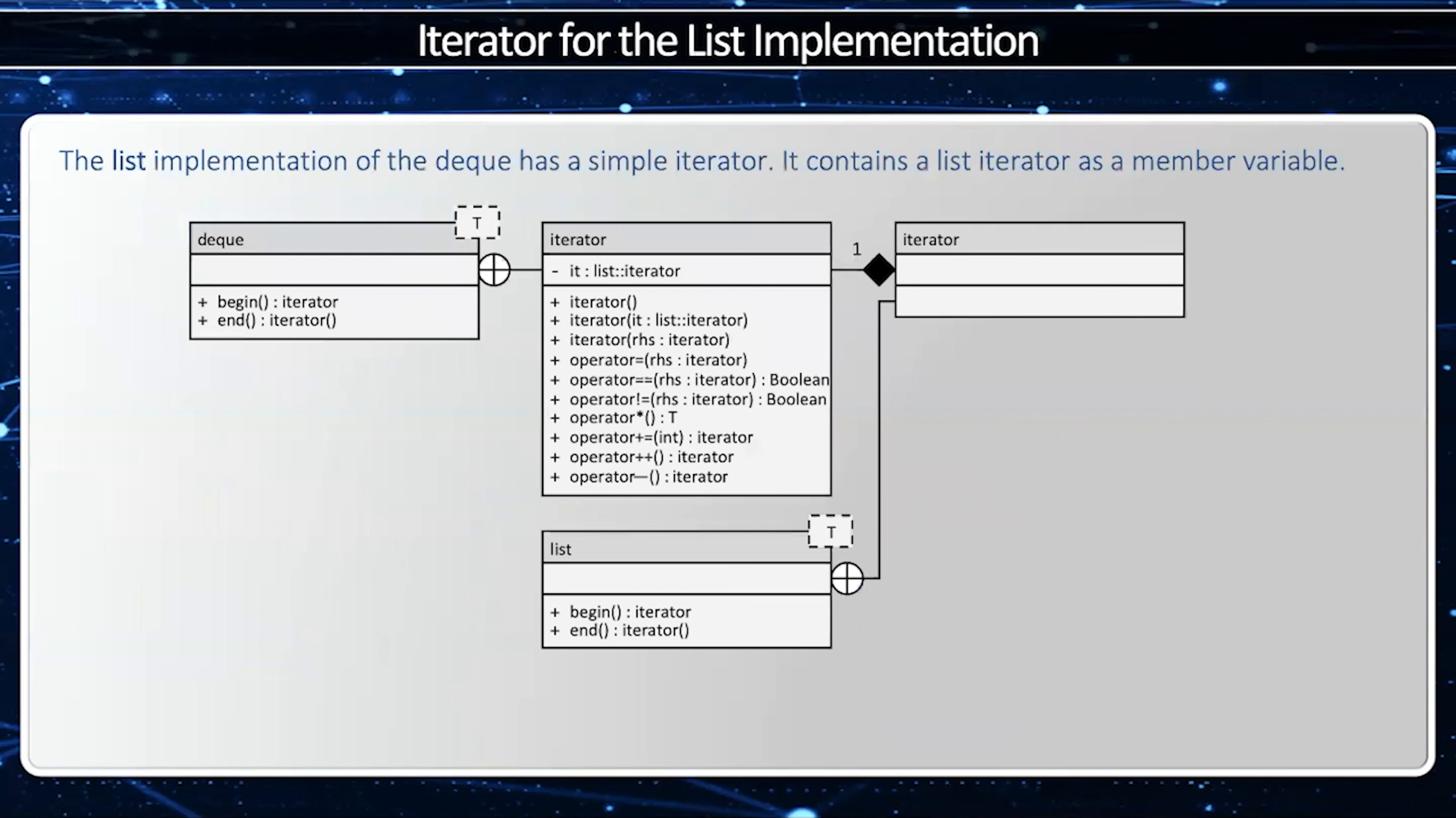The list implementation is actually trivial. The list implementation simply has a list iterator as a member variable. So the dereference, the plus plus, and the minus minus operators are trivial. It just calls the list plus plus, minus minus, and dereference operators.